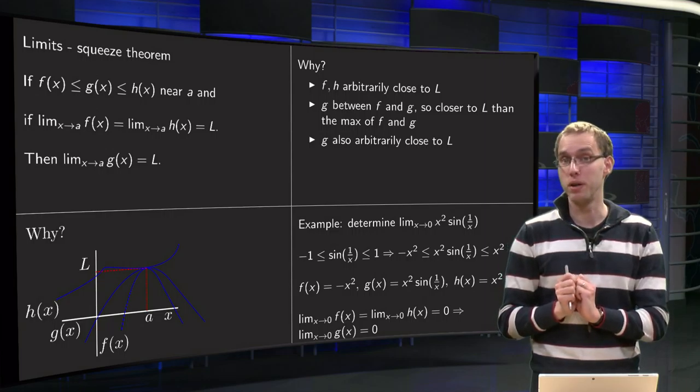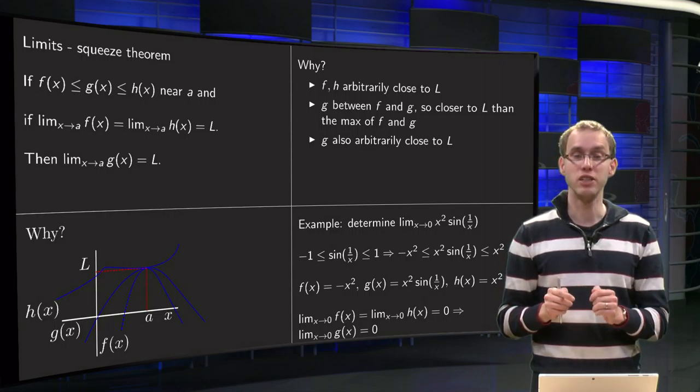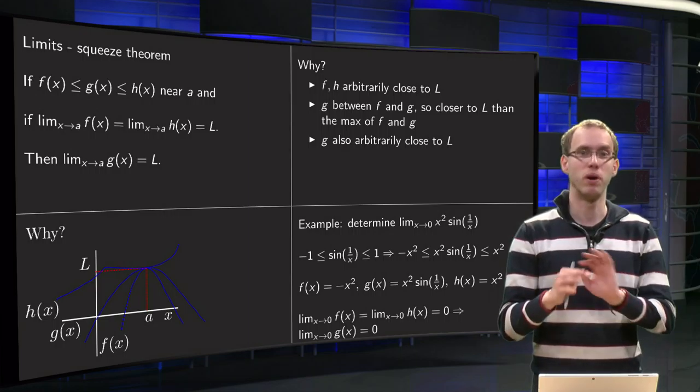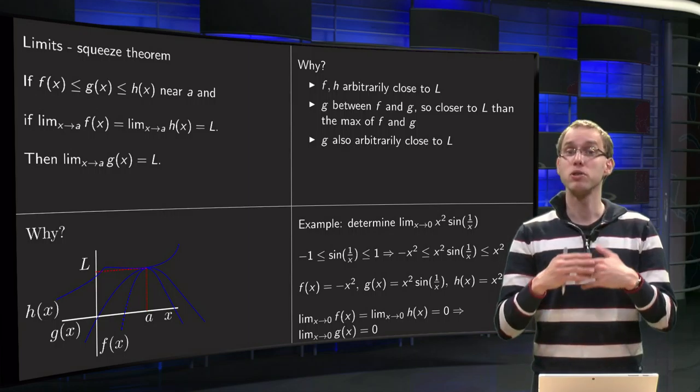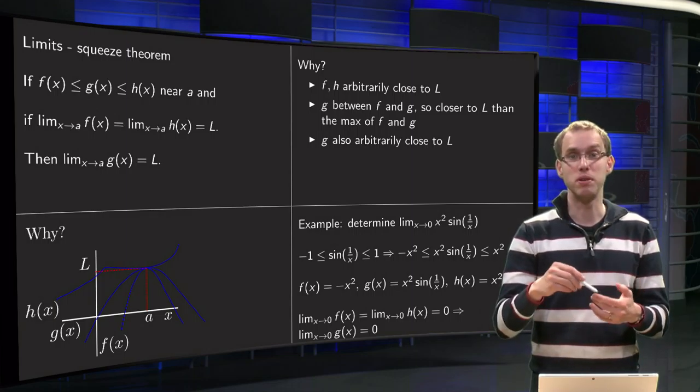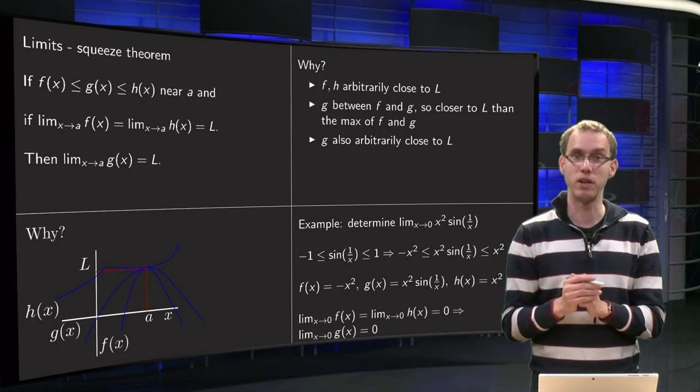the product rule in this case, because then we would have the limit as x approaches 0 of x², well that part is fine, but also times the limit as x approaches 0 of sin(1/x), and that does not exist because the sine is oscillating between -1 and 1.